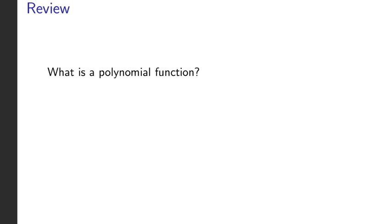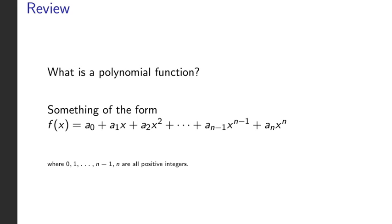It's something of the form f of x is equal to a sub zero plus a sub one x plus a sub two x squared plus dot dot dot plus a sub n minus one x to the n minus one plus a sub n x to the n. All it means is we're taking positive integer powers of the variable, multiplying them by numbers, and adding them up.